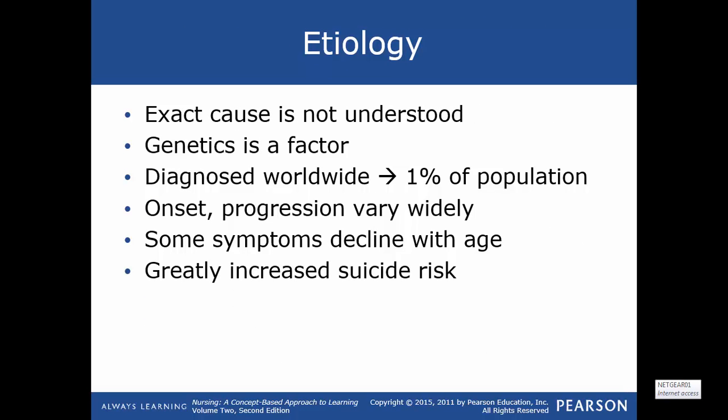Looking at the etiology, the exact cause is not understood. Genetics seems to be a factor — if parents or other people in the family have schizophrenia, it is more likely their offspring will have it too. It is diagnosed worldwide and affects about 1% of the population. The onset and progression will vary widely. Some adolescents have symptoms early, while some may not have any symptoms until their 40s. Symptoms usually tend to decline with age, with decreased delusions and hallucinations. There is a greater risk for suicide in schizophrenics.